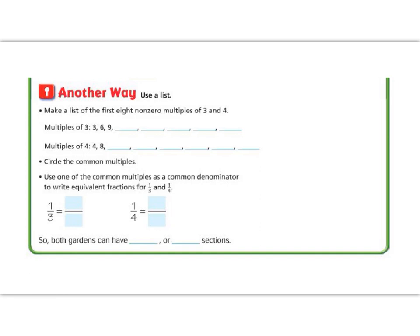Another way to find a common denominator is to make a list of the multiples of each number. When we think common denominators, we want to think bigger numbers, not smaller, because in order to get smaller we would need to divide, and it's easier to multiply. Let's list multiples of three and four. Counting multiples means counting by that number: three, six, nine, twelve, fifteen, eighteen, twenty-one, twenty-four.